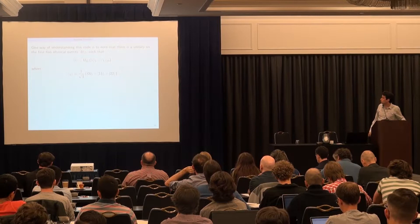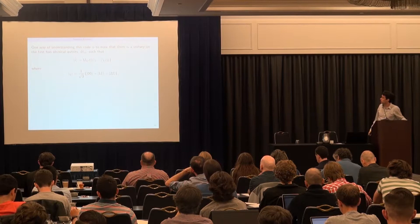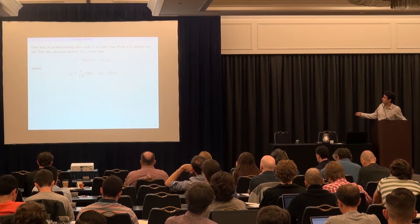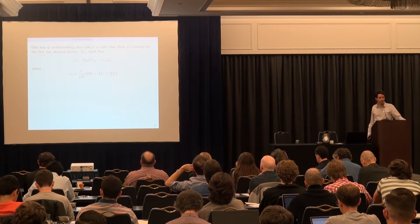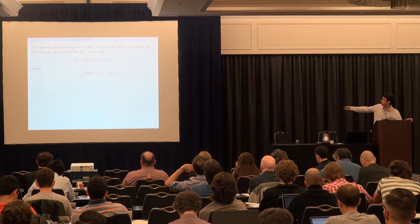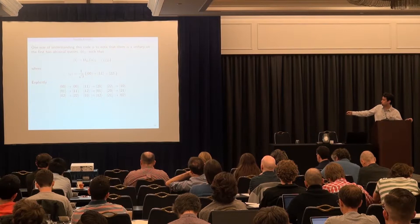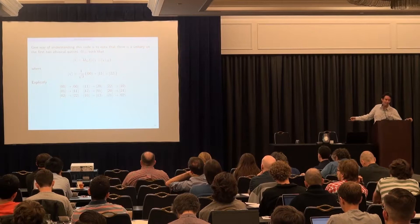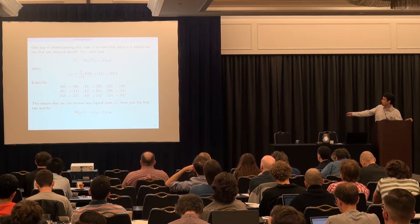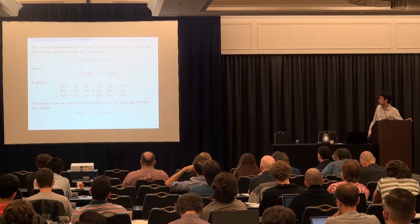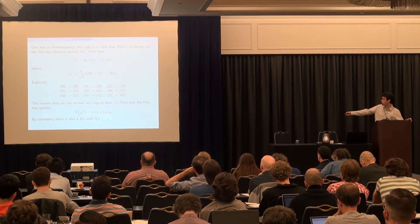I can always choose the encoding transformation to act only on the first two physical qutrits. Each code word is of the form where I take some unitary on the first two, put the unencoded message on the first qutrit, and have some maximally mixed state on the second two. This means any logical state can be recovered on the first qutrit by acting with the dagger of U_12, and by cyclic permutation symmetry, also on qutrit one-three or two-three.